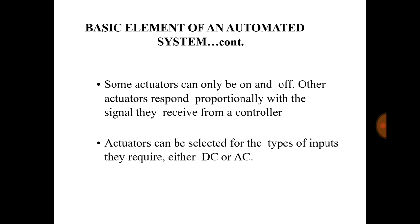Generally, for getting movement along X, Y, and Z axes you can use a stepper motor, where the input is given in the form of pulses. If you are using a stepper motor, feedback is not used. Whereas if you are using servo motors for getting motion along X, Y, and Z axes, then there will be a feedback device.